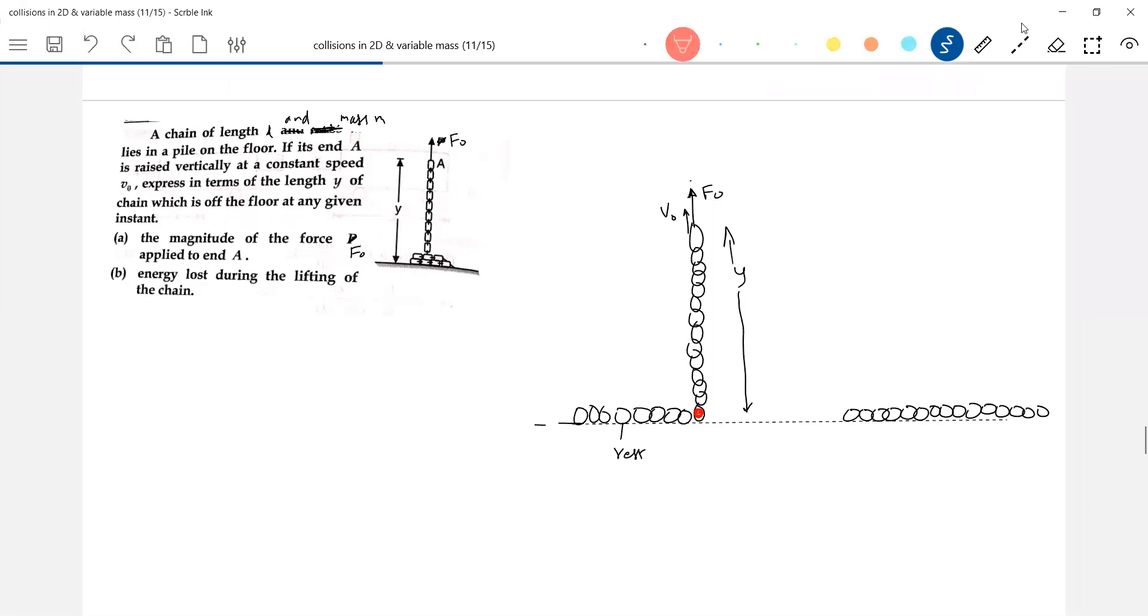So now what is the system. The vertical part of a chain is a system. So always you should be in better position to define what is the system here. Now we are not bothered about the chain lying on the ground, the chain that is being lifted. So this is a system, so it is having a velocity V.